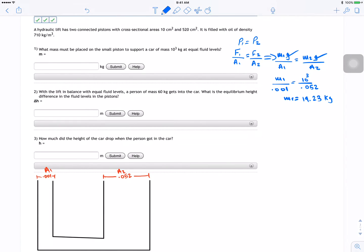Now, with the lift and balance with equal fluid level, a person of a mass of 60 kilograms gets into the car. What is the equilibrium height difference in the fluid level in the piston?